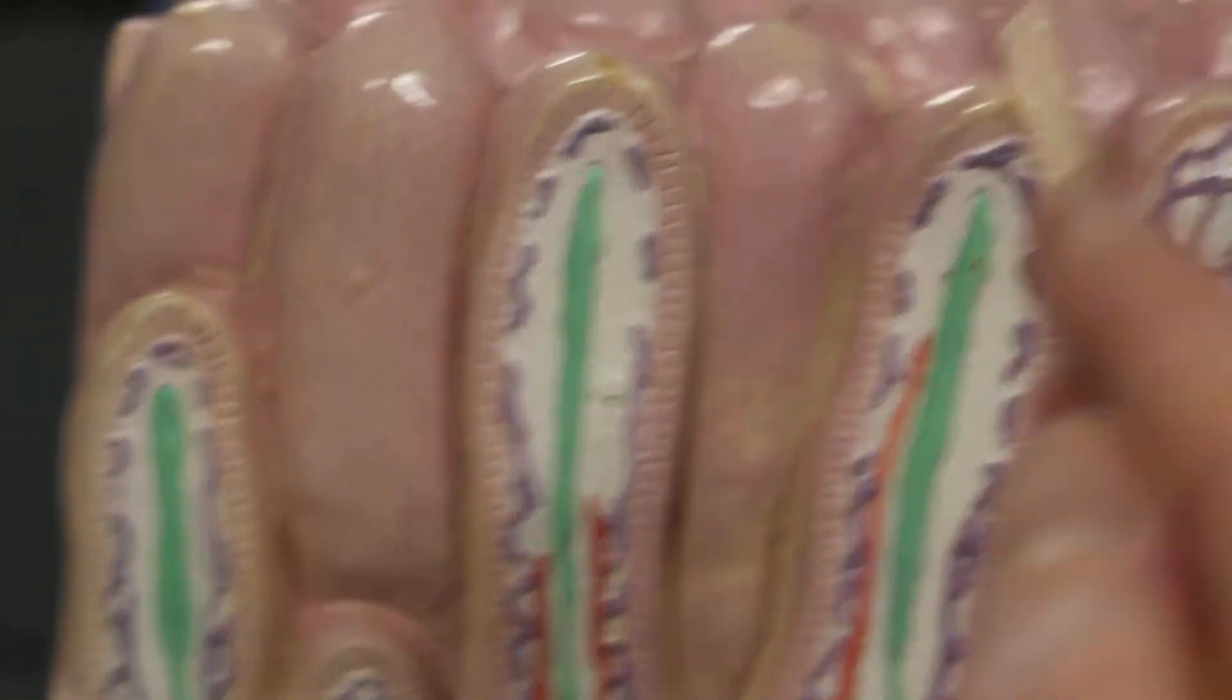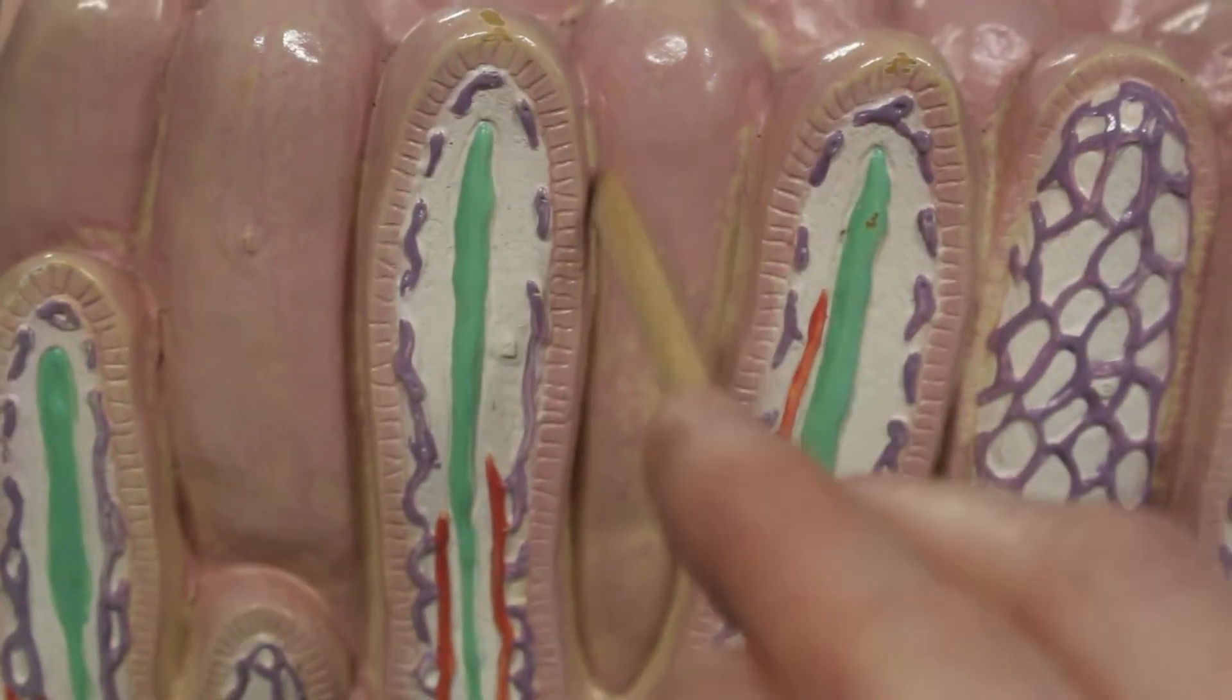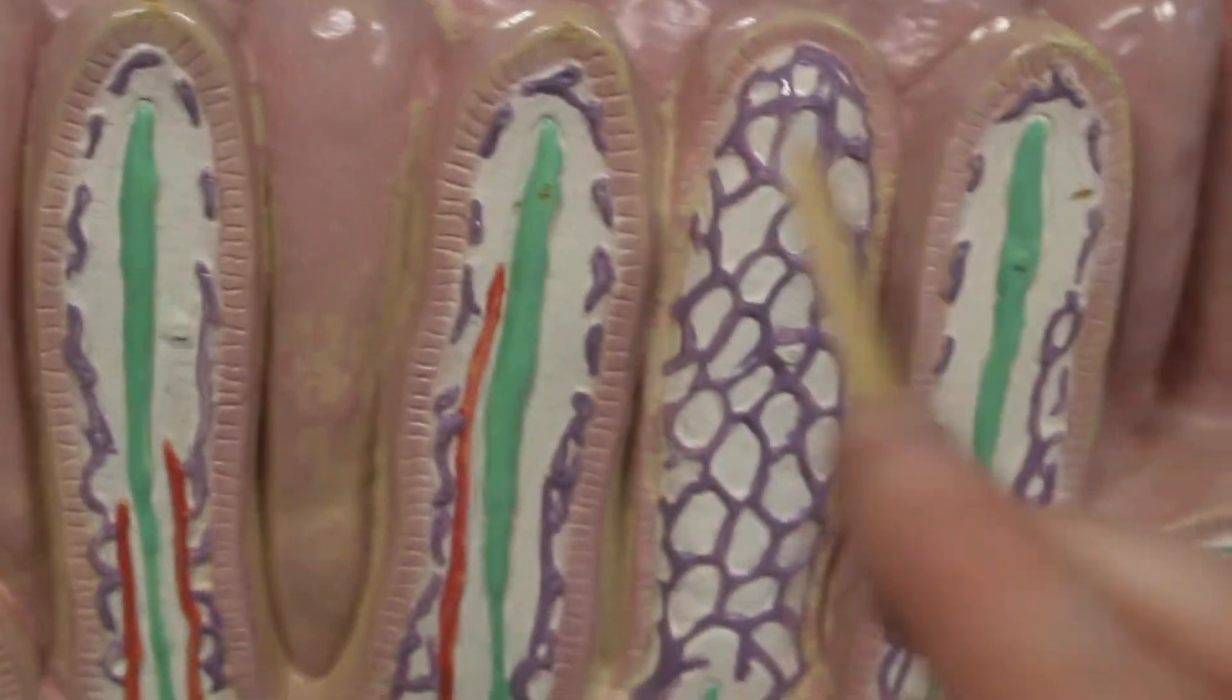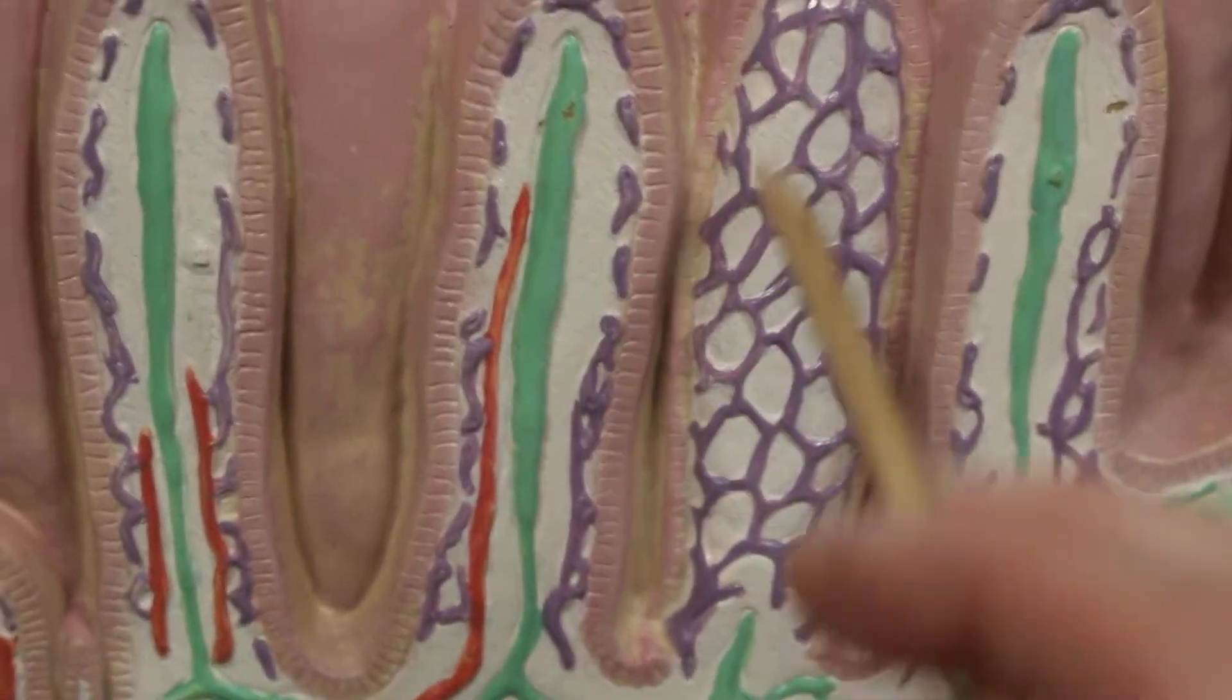And it's the villus. Here's a villus. There's a villus. In the center of the villus is lacteal. Also in the villus are these capillary beds.